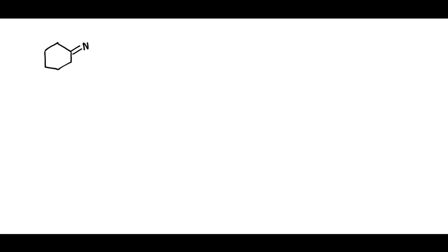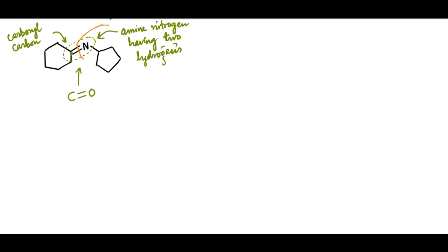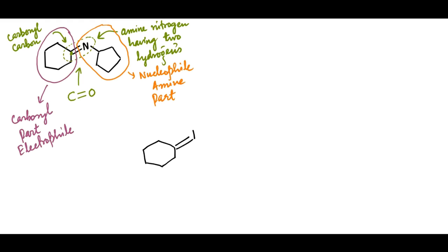We know that hydrolysis of imine is reverse of imine formation. We can do the retrosynthetic analysis of a particular imine to find out the reactants that formed it. For example in this imine, we know C=N double bond is formed in place of C=O double bond of aldehyde or ketone. We also know, before imine formation, this would have been carbonyl carbon and this amine nitrogen with two hydrogens. Therefore we can say, this comes from nucleophilic amine part, and this from electrophilic carbonyl part.